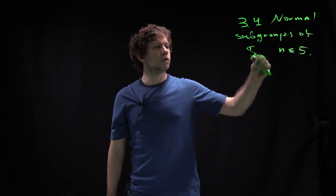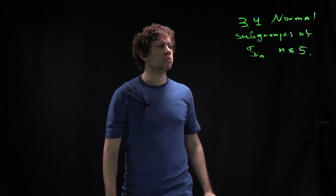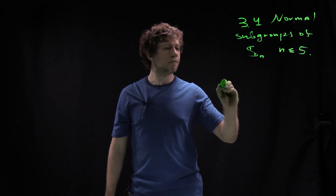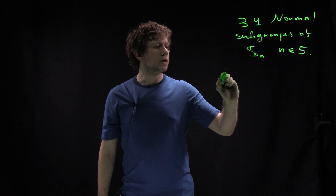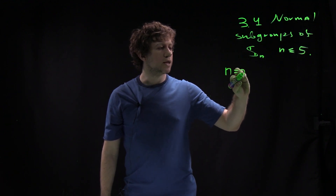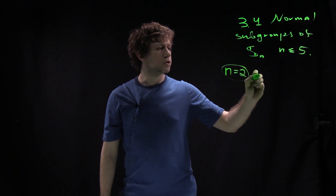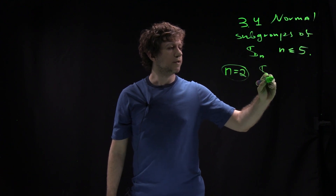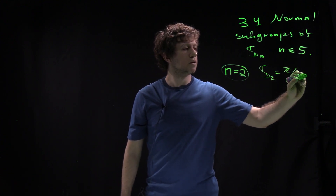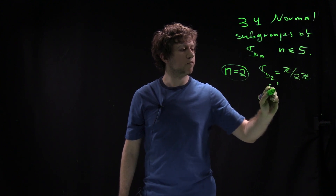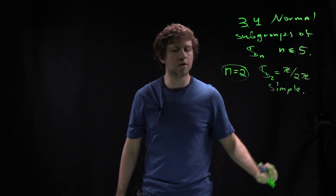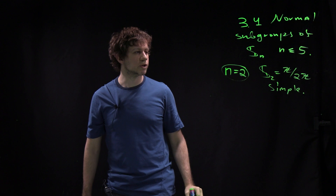We talk about normal subgroups of Sn for n less than or equal to 5. Starting with n equal to 2: S2 is the same thing as Z/2Z and it is simple, so nothing interesting happens here.